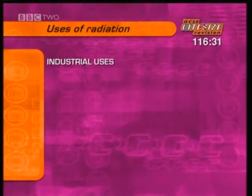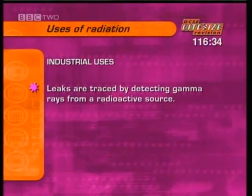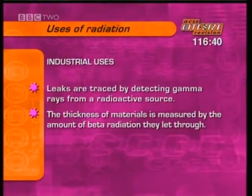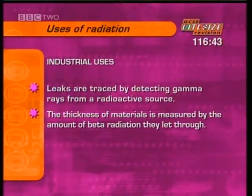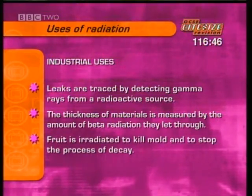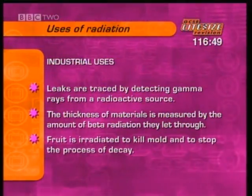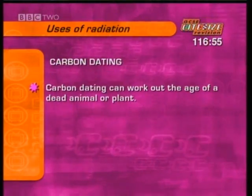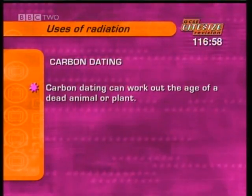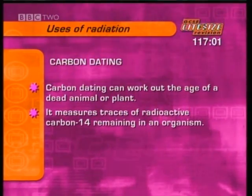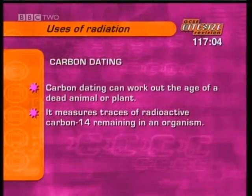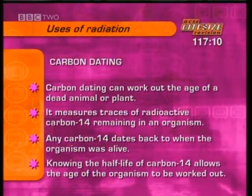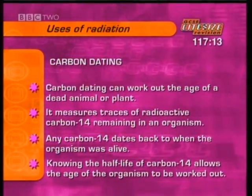Radiation has many other industrial uses. Leaks in underground pipes are traced by detecting gamma rays emitted from a radioactive substance. The thickness of materials can be measured by the amount of beta radiation they let through. Fruit is irradiated to kill mould spores and to stop the process of decay. Carbon dating can be used to work out the age of a dead animal or plant by measuring traces of radioactive carbon-14 remaining in it. Any carbon-14 must date back to when the organism was alive, so knowing the half-life of carbon-14 allows the age of the organism to be worked out.